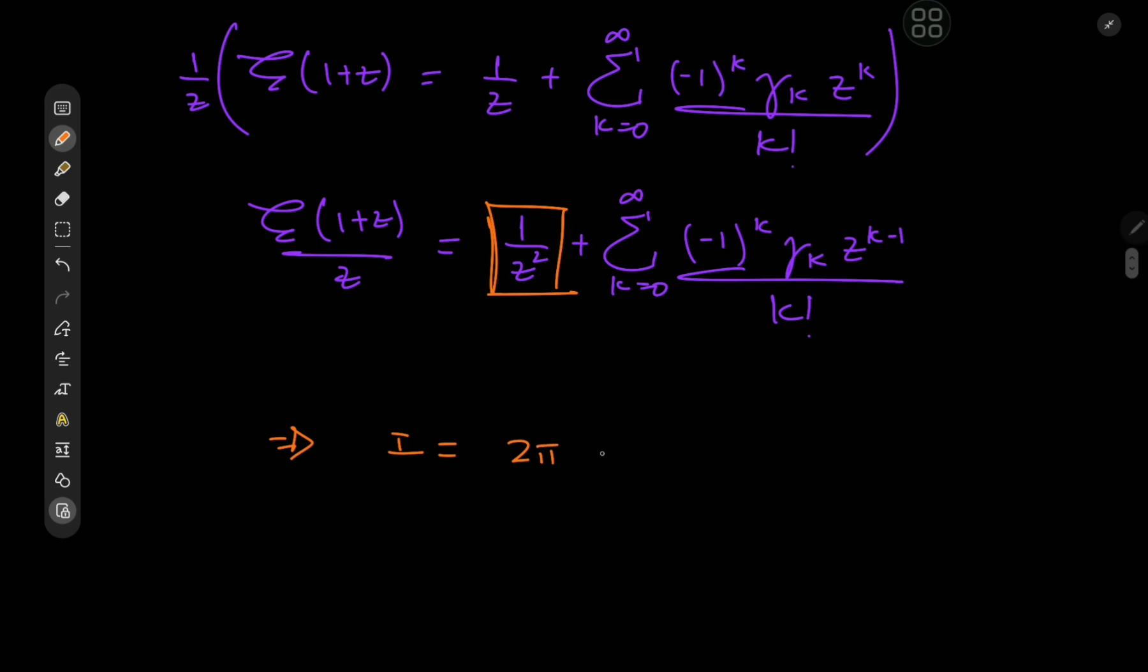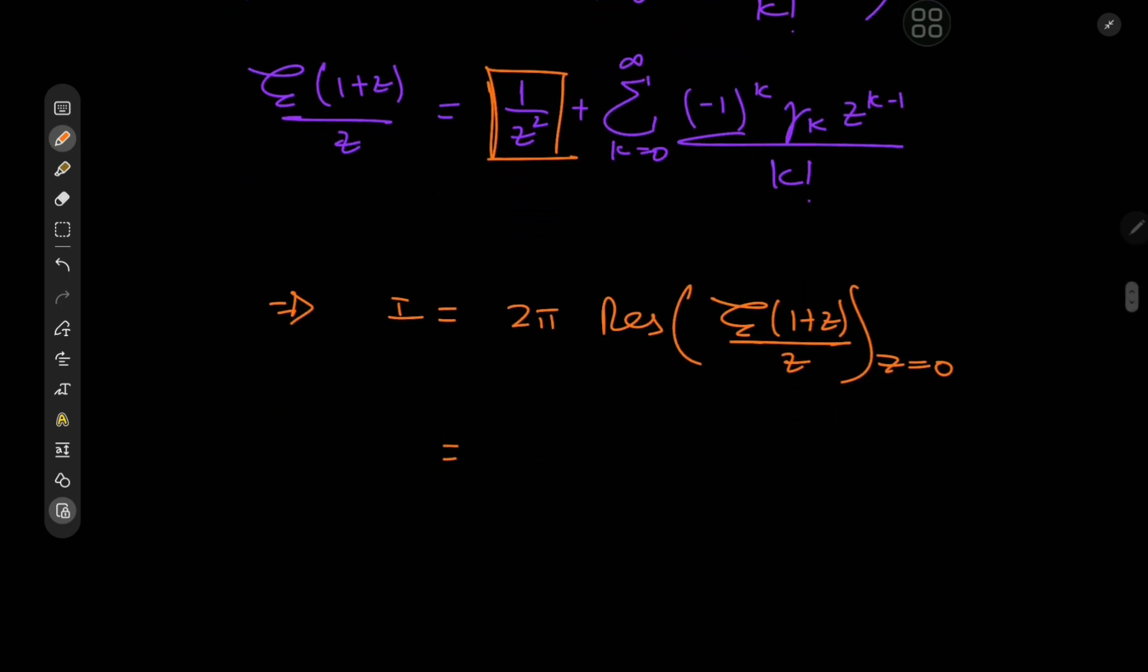so we have 2π times the residue of ζ(1+z)/z at z = 0, which by virtue of being a pole of order 2 is calculated as follows. We need the derivative with respect to z of z² times our function,